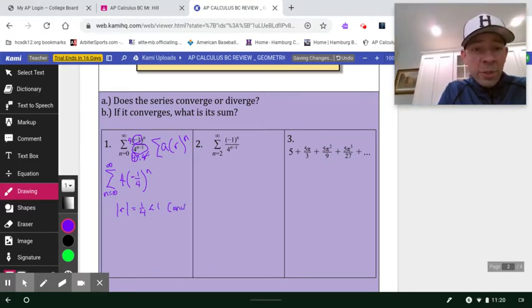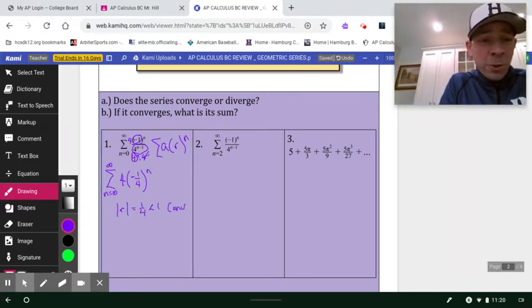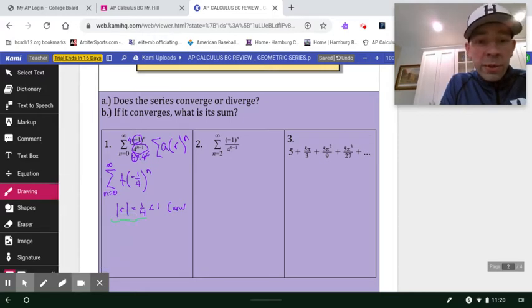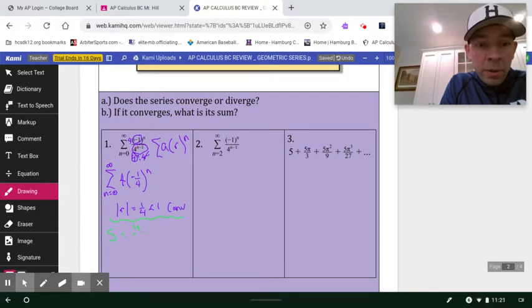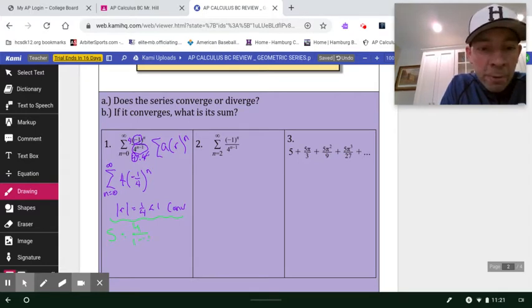Now the next question is, what does it converge to? The sum is going to be a over one minus... Now watch this. My r isn't one fourth. My r is actually negative one fourth. So that's actually going to be five fourths on the denominator. So I'm thinking, take my four, multiply by the reciprocal of the denominator, and I'm going to get 16 fifths for my sum.